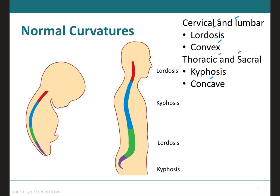The cervical and the lumbar curvatures, besides being convex, receive the name of lordosis. And the thoracic and the sacral, besides being concave, are also called kyphosis. A memory tip: lumbar starts with L and lordosis starts with L, and they alternate. So you have cervical as lordosis, then thoracic as kyphosis, then lumbar as lordosis, then sacral as kyphosis.